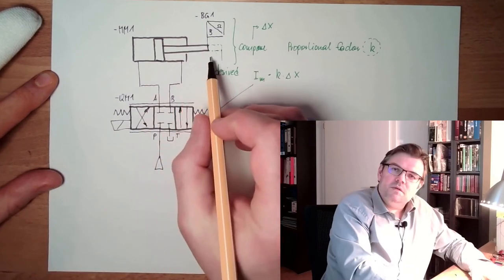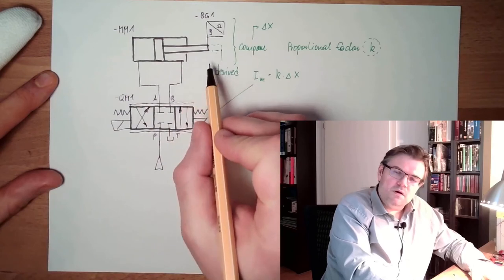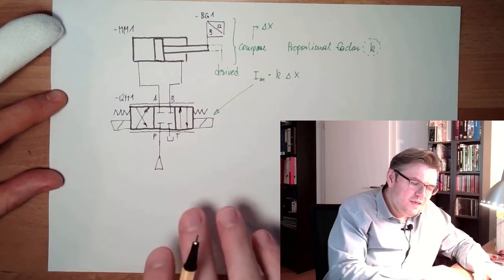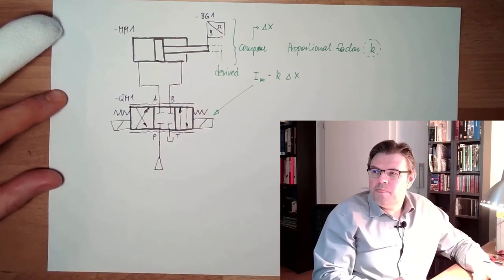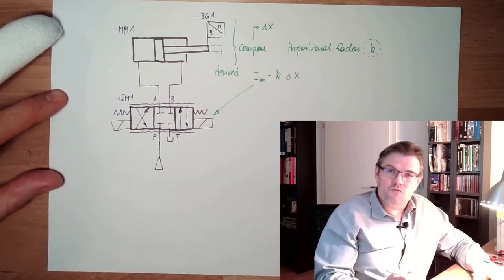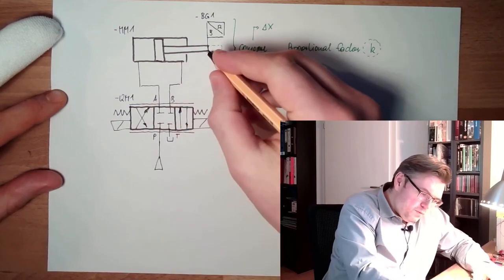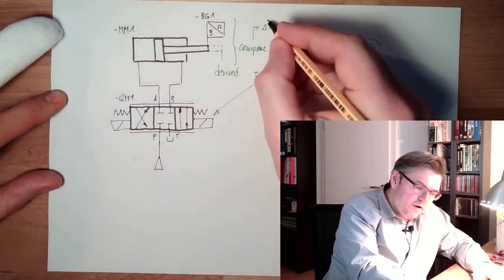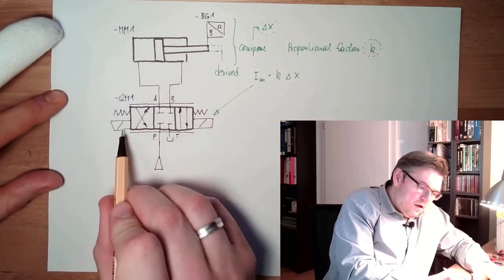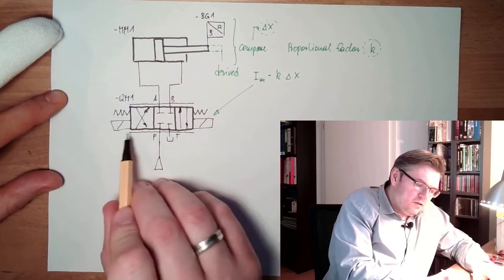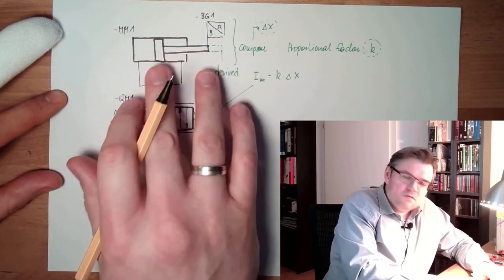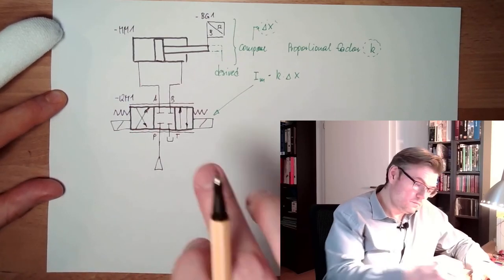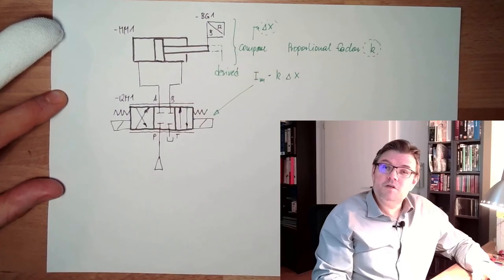And the further I go to the desired position, at exactly the desired position we will have middle position. We will probably stop a little bit before because then it's just leakage oil or something like this. So this is a position control loop. Measure position, know where we want to go, depending on the difference, adjust the magnetizing current of the proportional valve and let the cylinder move.